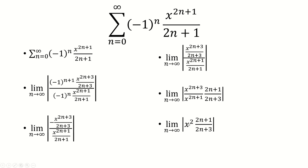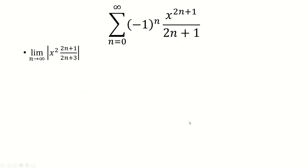And then this x squared, if you want, it can come outside. And then the limit of this is just 1. So really, you just end up with the absolute value of x squared. And the ratio test says that in order for this to converge, the limit has to be less than 1, which the only way this happens is if x is between negative 1 and 1.